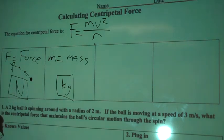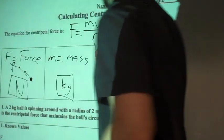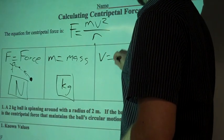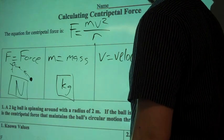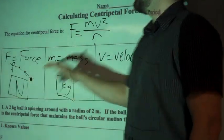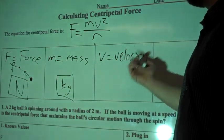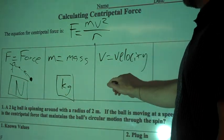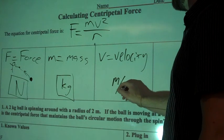So velocity is the next thing we're going to look at, and v equals velocity, and that's usually you're looking at how fast this thing is spinning, so how fast it's moving. Velocity, we're usually going to see it measured in most of the problems we do in meters per second.